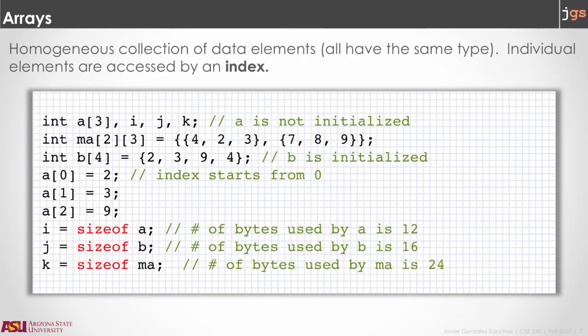As you can notice in the example, arrays in C are quite similar to the notion of array that you know from Java. You can create unidimensional arrays, bidimensional arrays, tridimensional arrays, and so on.